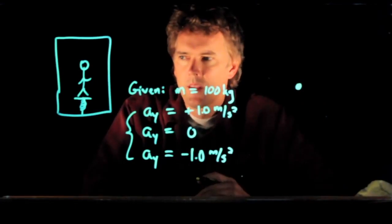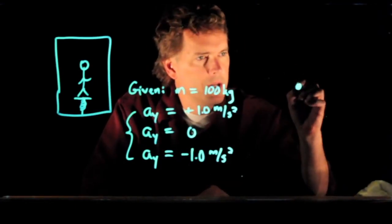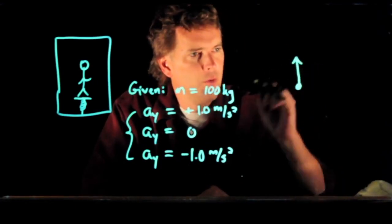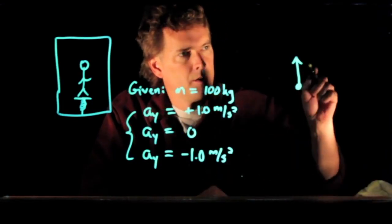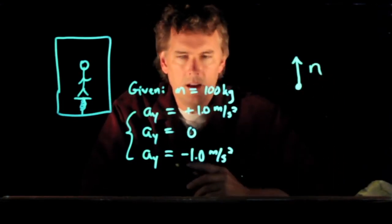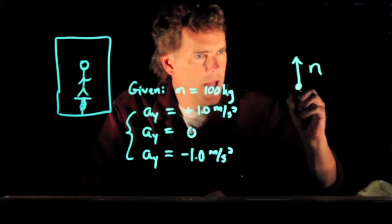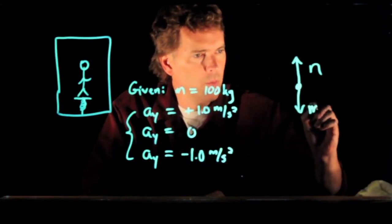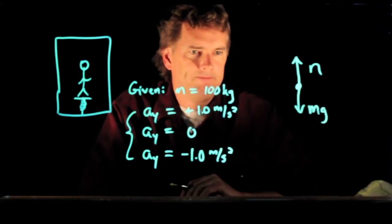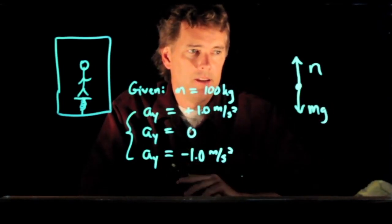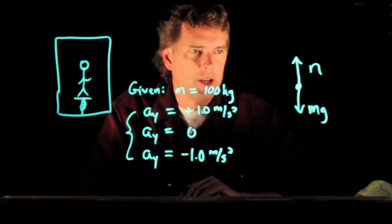Let's draw the free body diagram. You become a dot and there are some forces acting on you. There is the normal force N from the scale pushing up on you, and there is your weight mg down. That is it for the free body diagram.